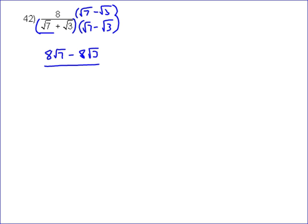The difference of two squares says you can square these two, which is 7, square these two, which is 3. √7 times √7 is just 7. √3 times √3 is just 3.